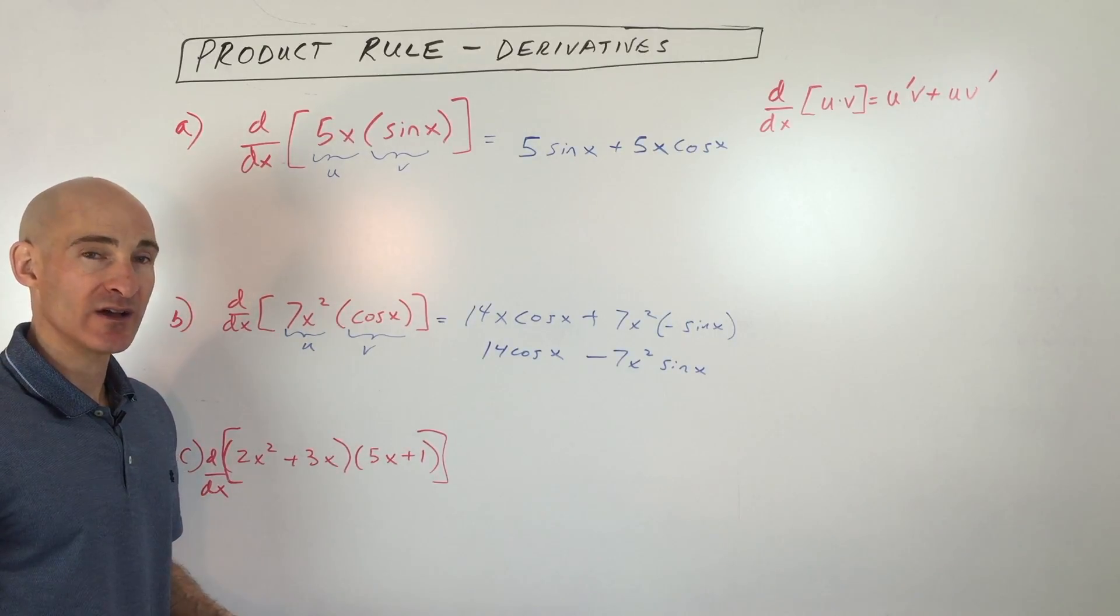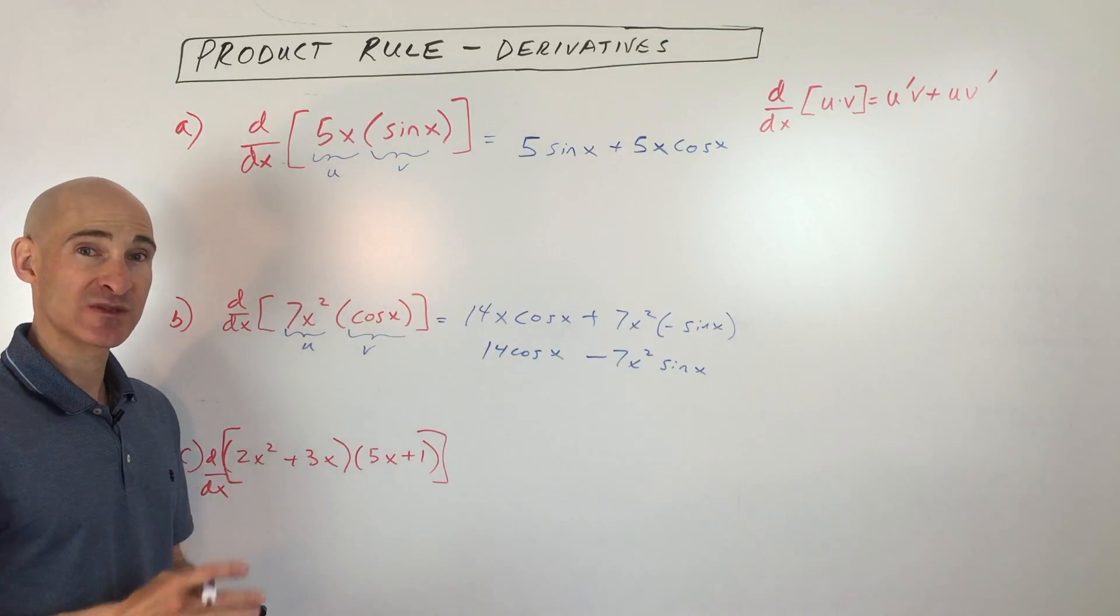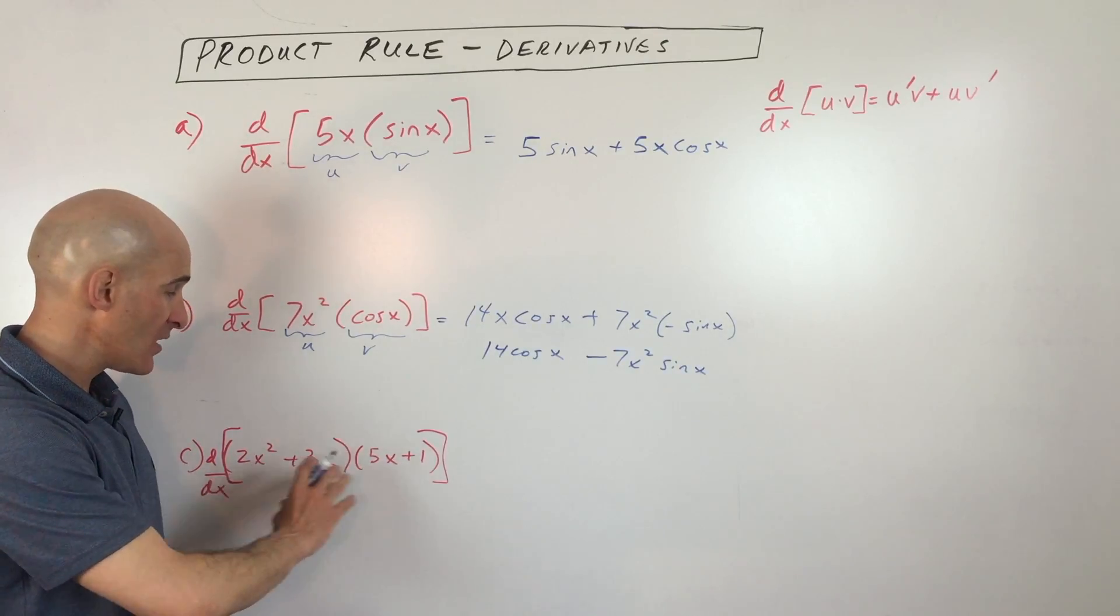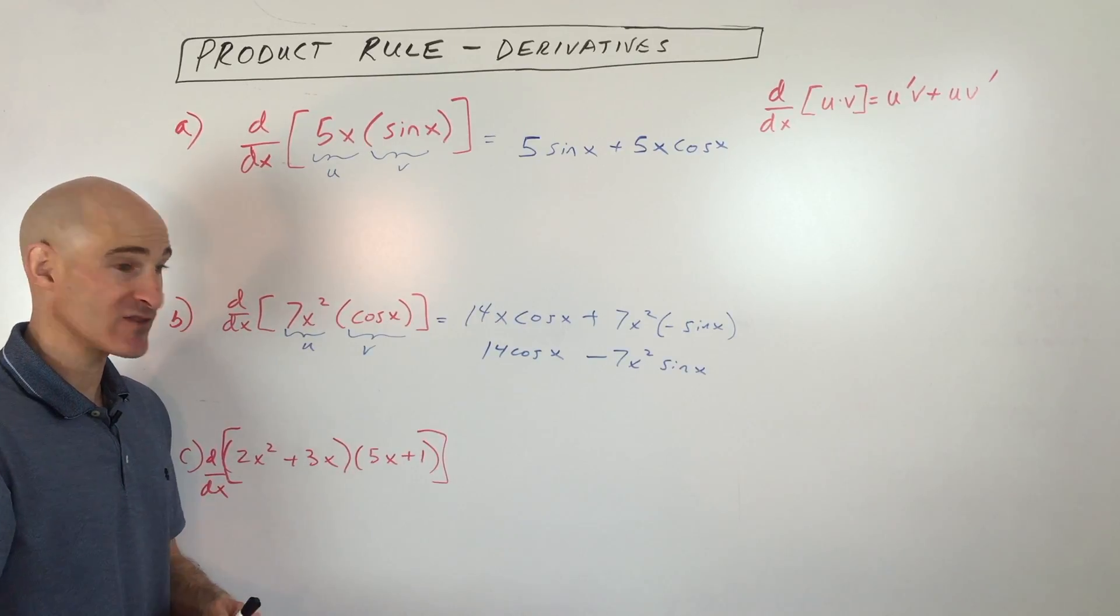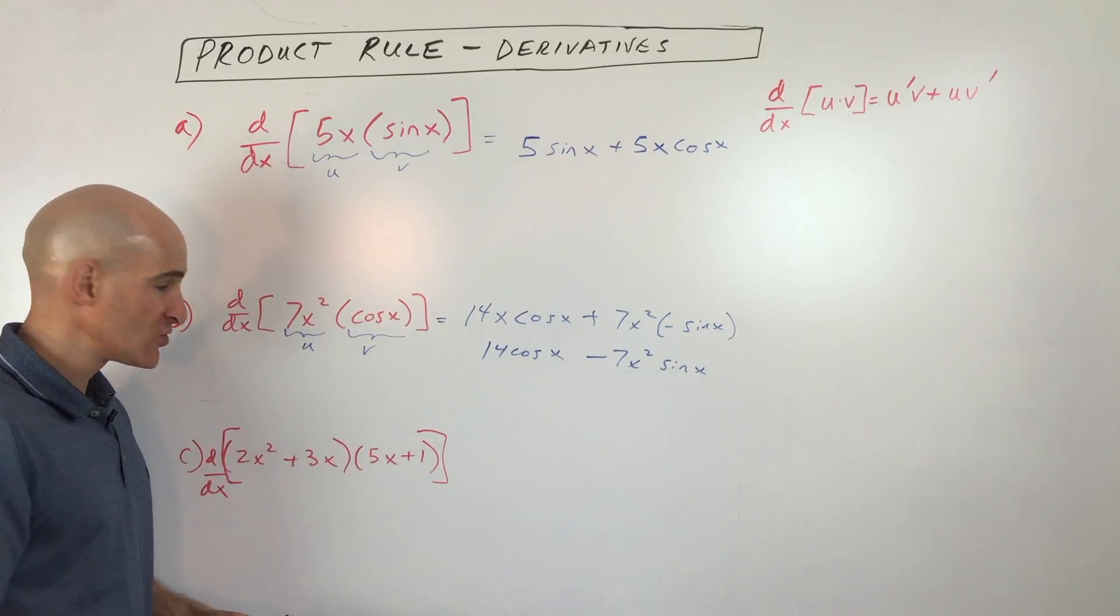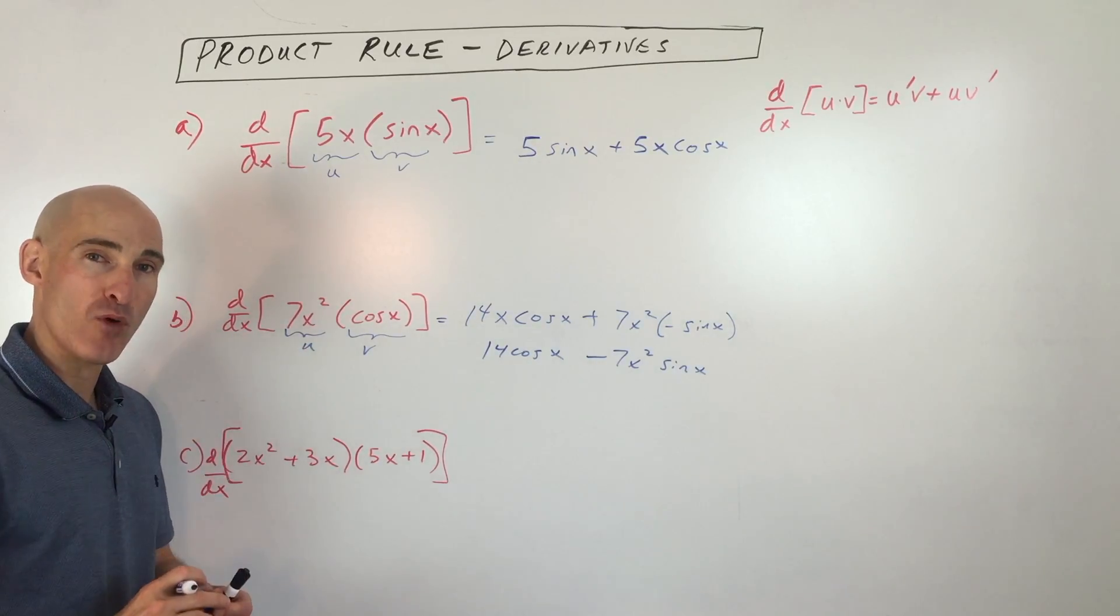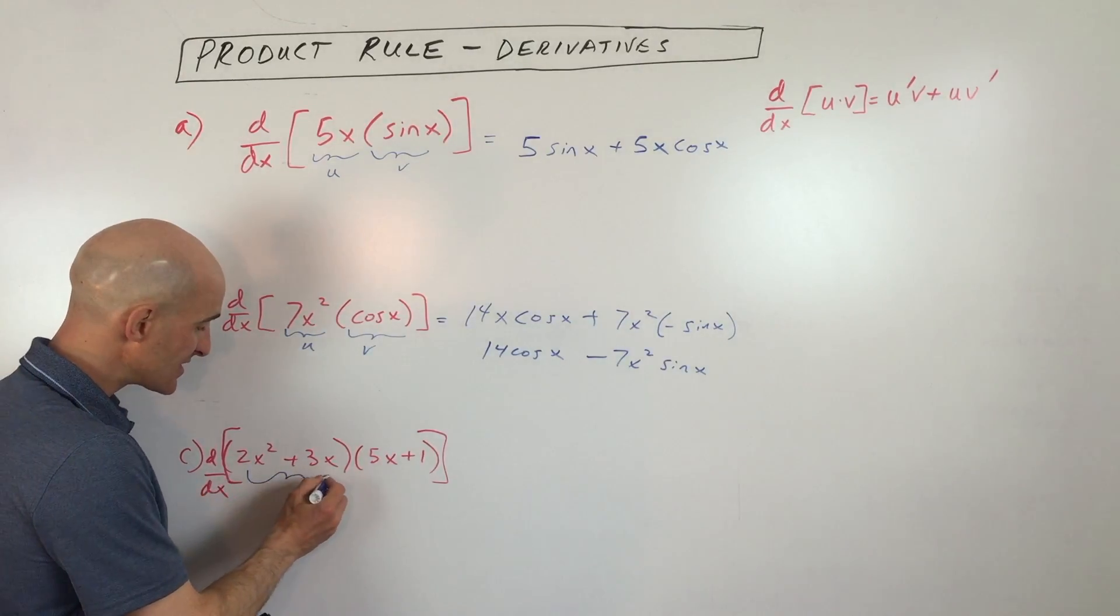But sometimes when you're doing calculus problems, all you really need to do is find the slope of the tangent line at a specific point. You might not want to go through all that process of simplifying, taking the derivative just to find the slope. Let's just work with what I have here, and then I can substitute in my x value to find the slope at that point.